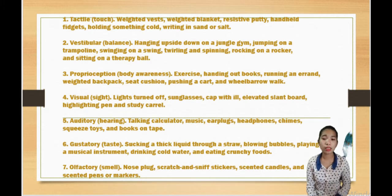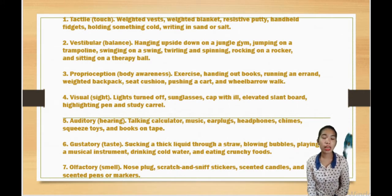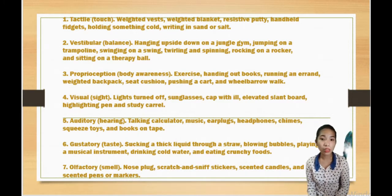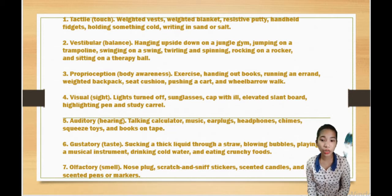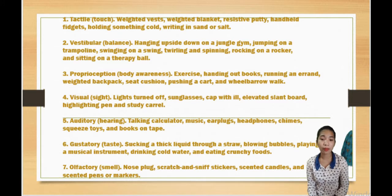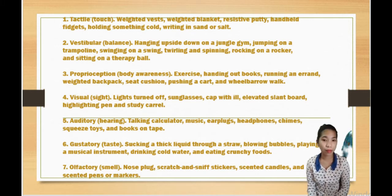The sixth sensory type is gustatory, or taste. Examples include sucking a thick liquid through a straw, blowing bubbles, playing a musical instrument, drinking cold water, and eating crunchy foods. The seventh is olfactory, or smell. Examples include nose plugs, scratch-and-sniff stickers, scented candles, scented wands, or markers.